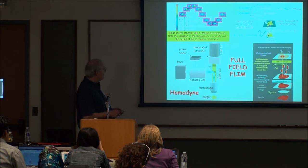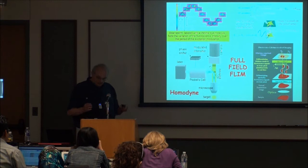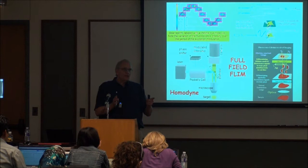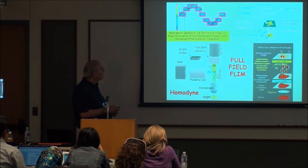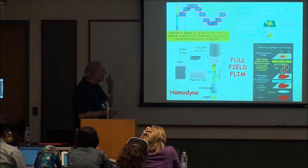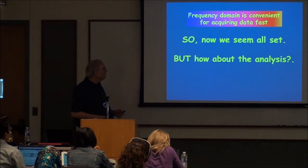You put this in, you modulate the light with something — like a Pockels cell or a Kerr cell — and then you modulate your intensifier, or you modulate the detection device. Your detection device has to be modulated in order to do either heterodyne or homodyne. You mix your signal — you have the fluorescence coming out and you're mixing it with a signal at a very close frequency.